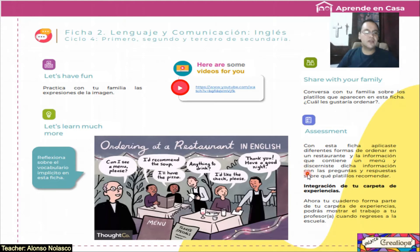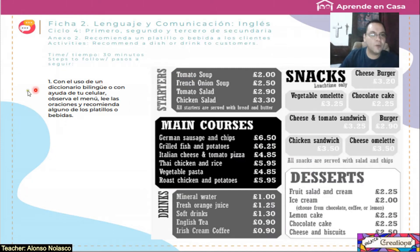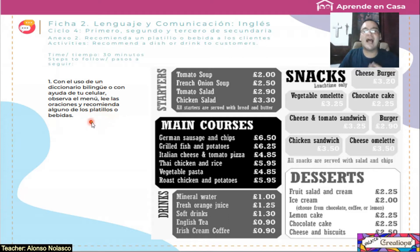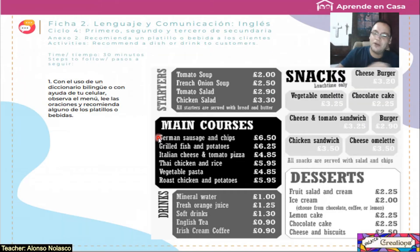Now we pass to the next presentation — diapositiva — and look at the menu. Number one: with the use of a bilingual dictionary or with your phone, observe the menu, read the sentences, and recommend some of the platillos or bebidas. ¿Cuáles oraciones? Las que vamos a ver a continuación, pero primero vamos a analizar los alimentos y bebidas.